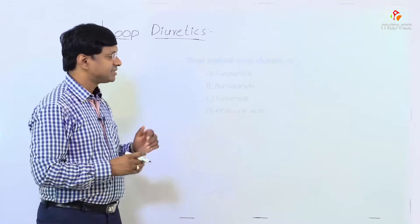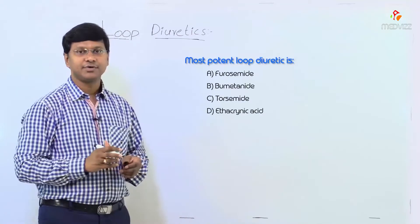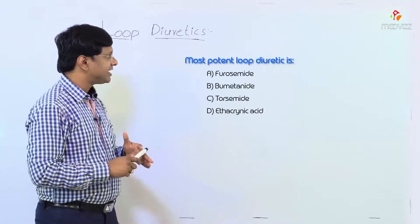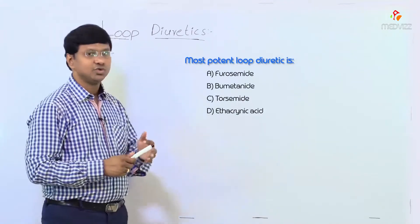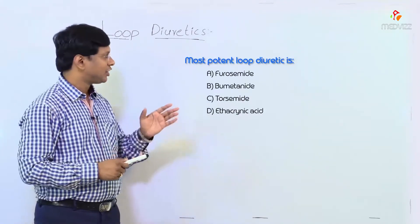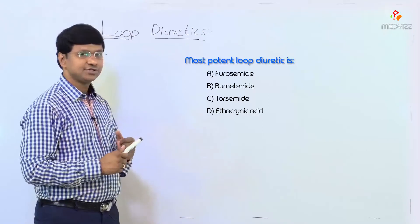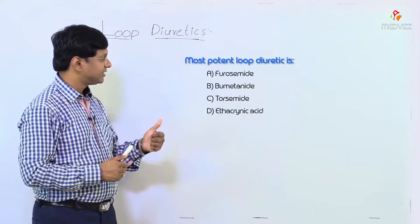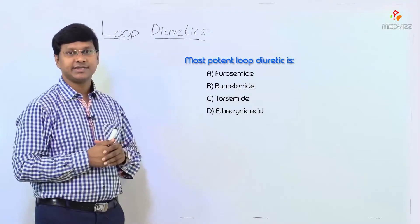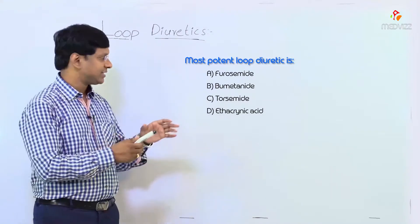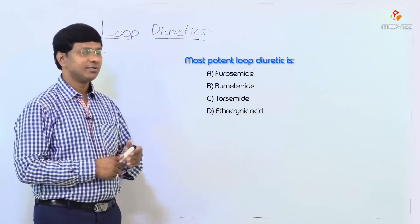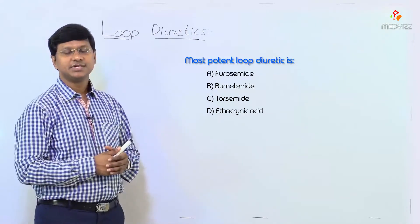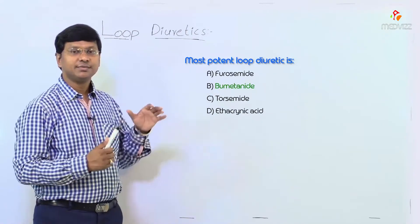Let me discuss some important MCQs. The question that can be asked is: which is the most potent loop diuretic? The options are furosemide, bumetanide, torsemide, and ethacrynic acid. As we have just discussed, the most potent loop diuretic among all of these is bumetanide.